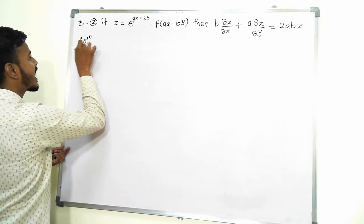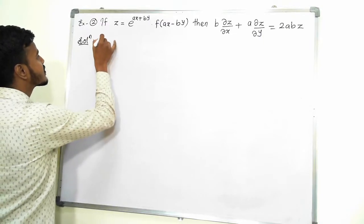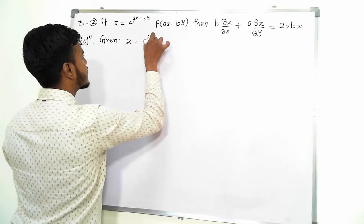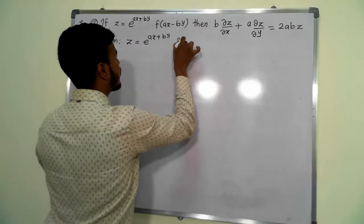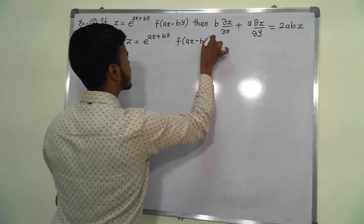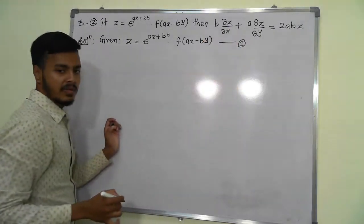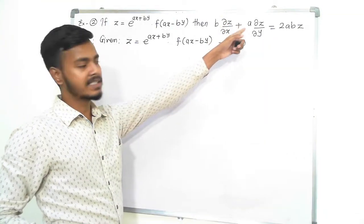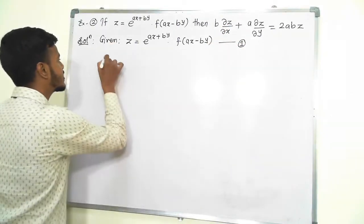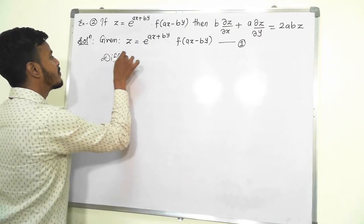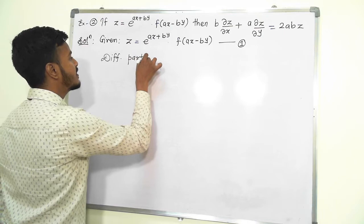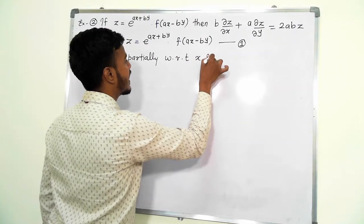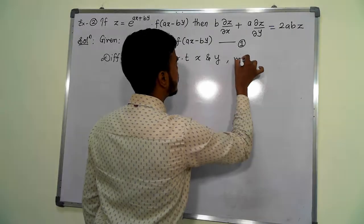Let us solve this problem. Given: z is equal to e to the power (ax + by) into f of (ax minus by) — call this equation number 1. The question demands something involving ∂z/∂x and ∂z/∂y, so I need to differentiate partially with respect to x and y.